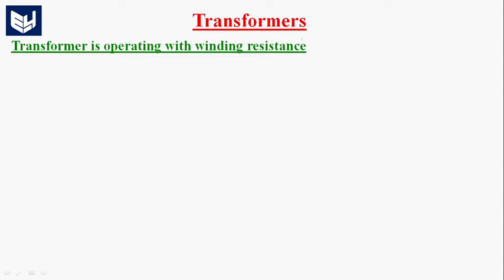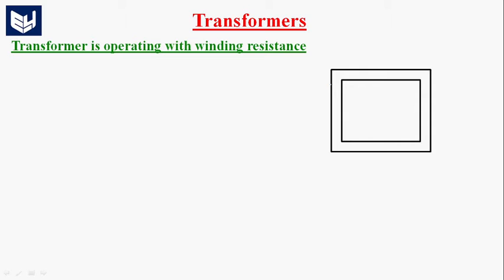Hi guys, now we are going to study the operation of the transformer by considering the winding resistance. For this we are considering the basic magnetic core, to which a winding is connected. Generally, a winding which is connected to source is called primary winding and a winding which is connected to load is called secondary winding.